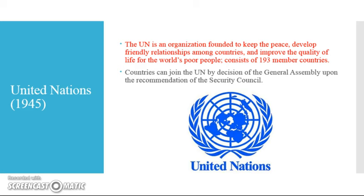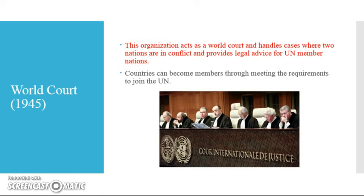The next organization is the UN, created in 1945. It basically acts as the referee for the planet — its main point is to keep peace and develop friendly relationships among countries. Today there are over 193 member countries. Countries join the UN through a vote: the General Assembly votes and makes a recommendation to the Security Council. Out of the UN comes the World Court, which handles cases between UN members — so if one country wants to sue another, it can go to the World Court.